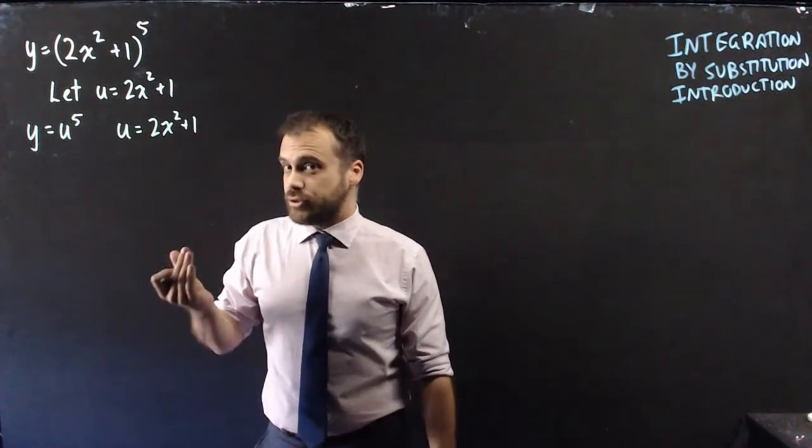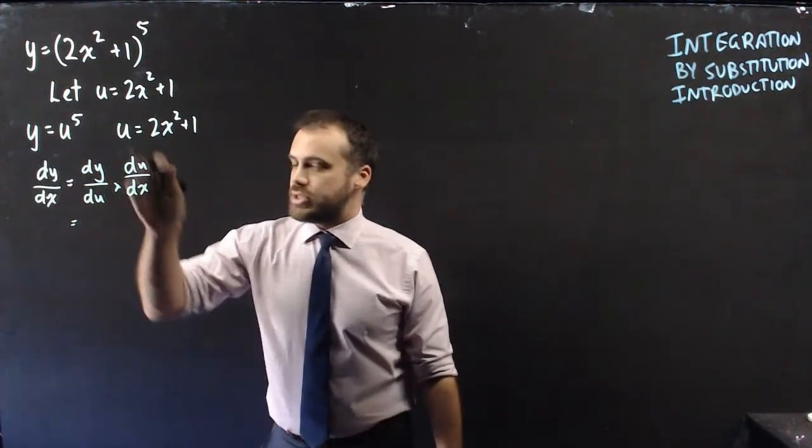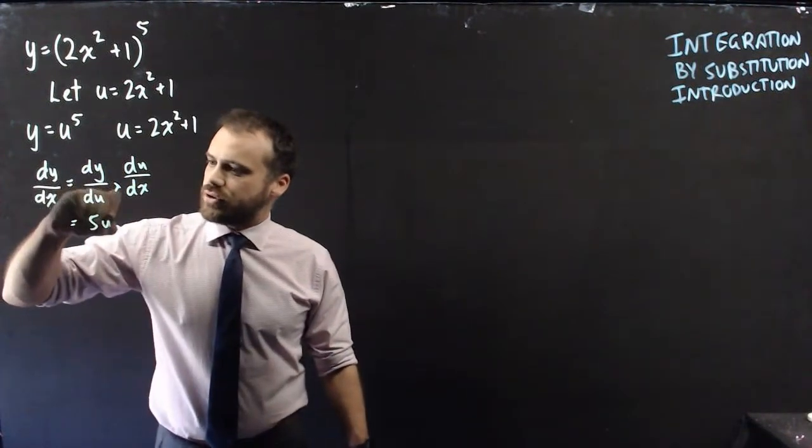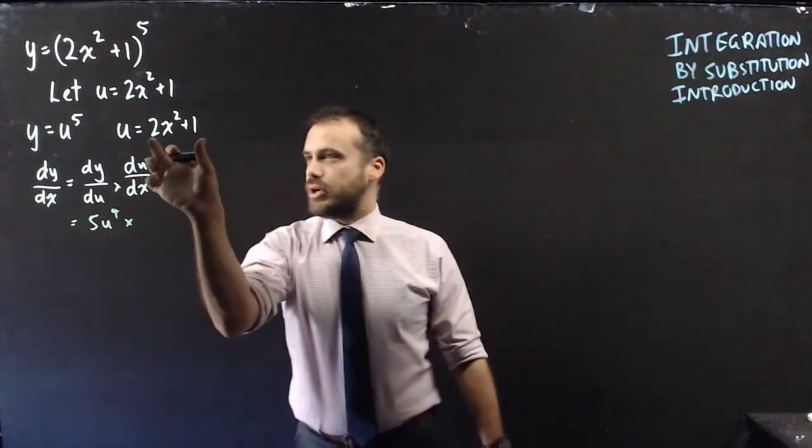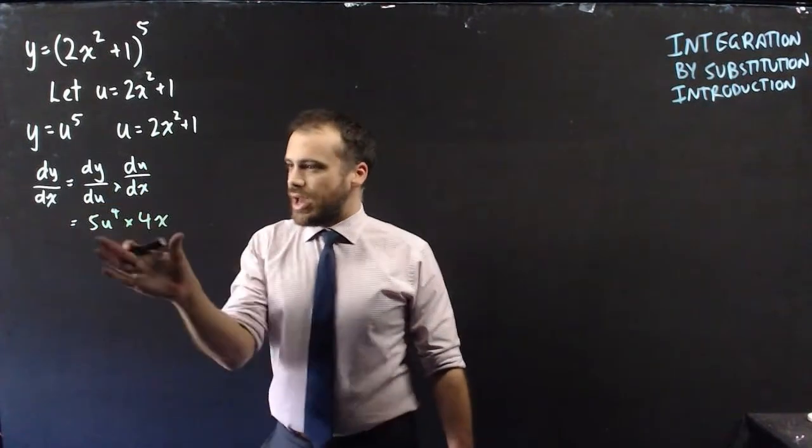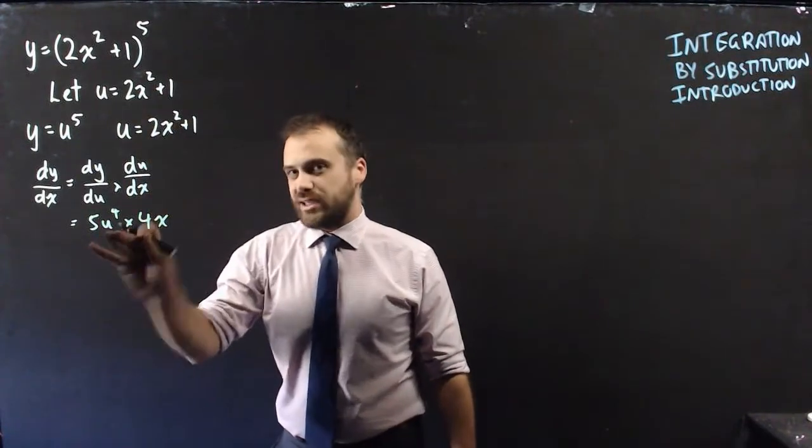We can now use the chain rule like this: dy/dx equals dy/du times du/dx. Put the derivative here so 5u^4 multiply it by the derivative of that, 4x.